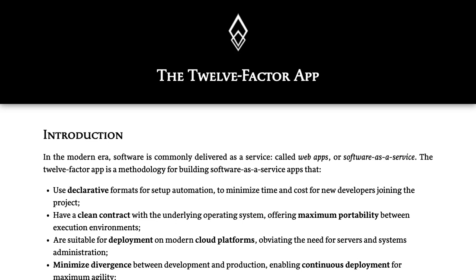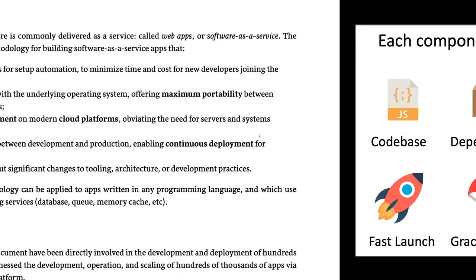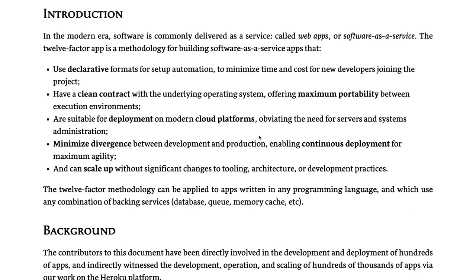The 12 Factor App is nothing but a set of principles which you can apply on your microservices, whether you are writing them in Java, Node.js Express, Node.js NestJS, or any other framework. The 12 Factor App principles cover: codebase, dependencies, configurations, code binding, statelessness of your applications, fast launch, deployment, CI/CD, graceful stop, log stream, and concurrency.